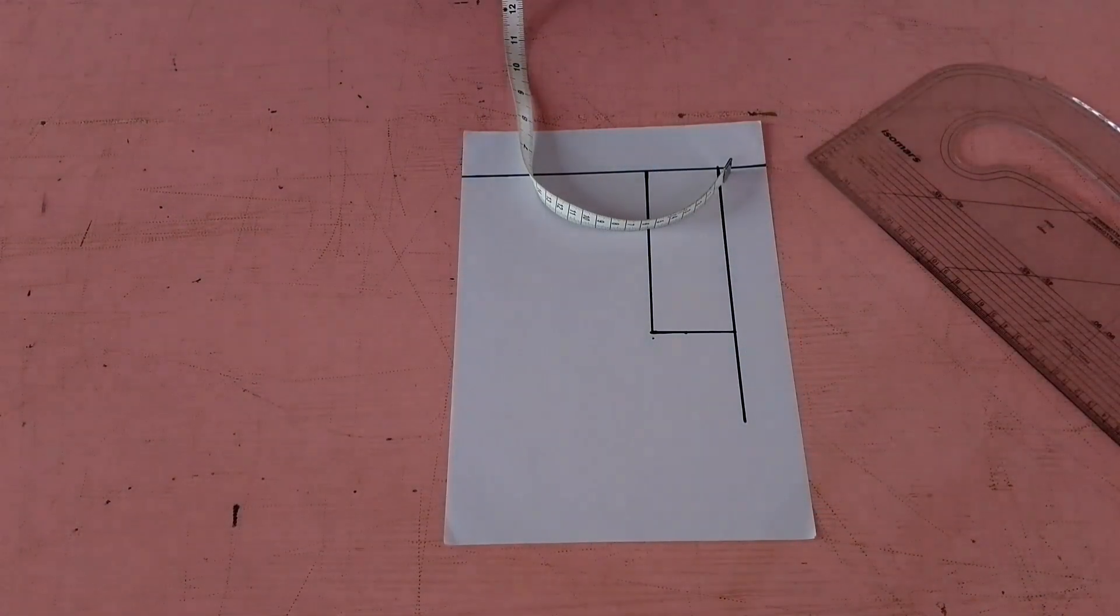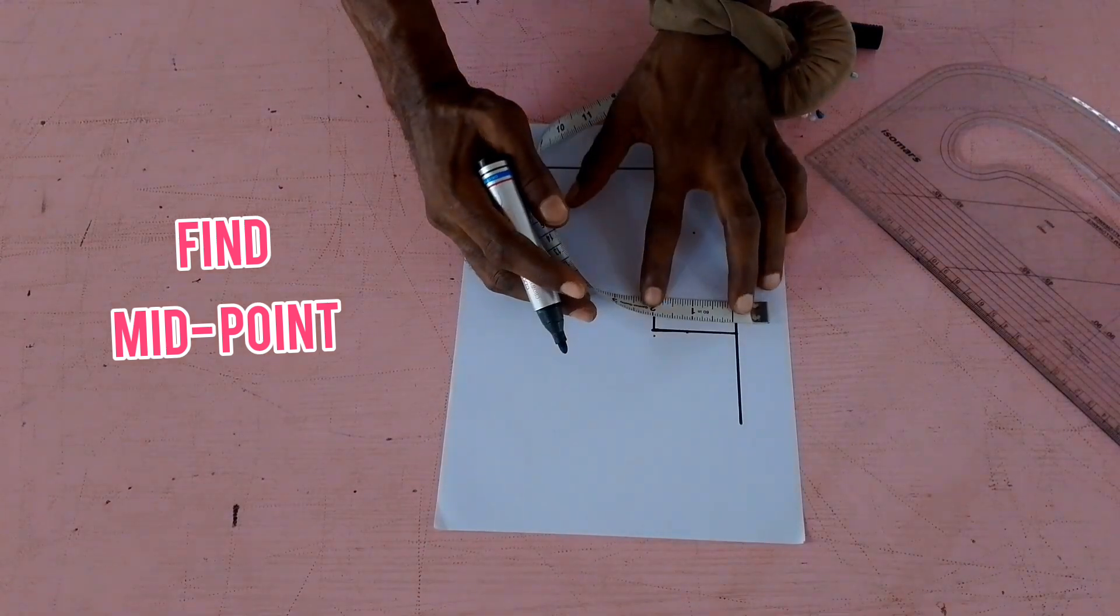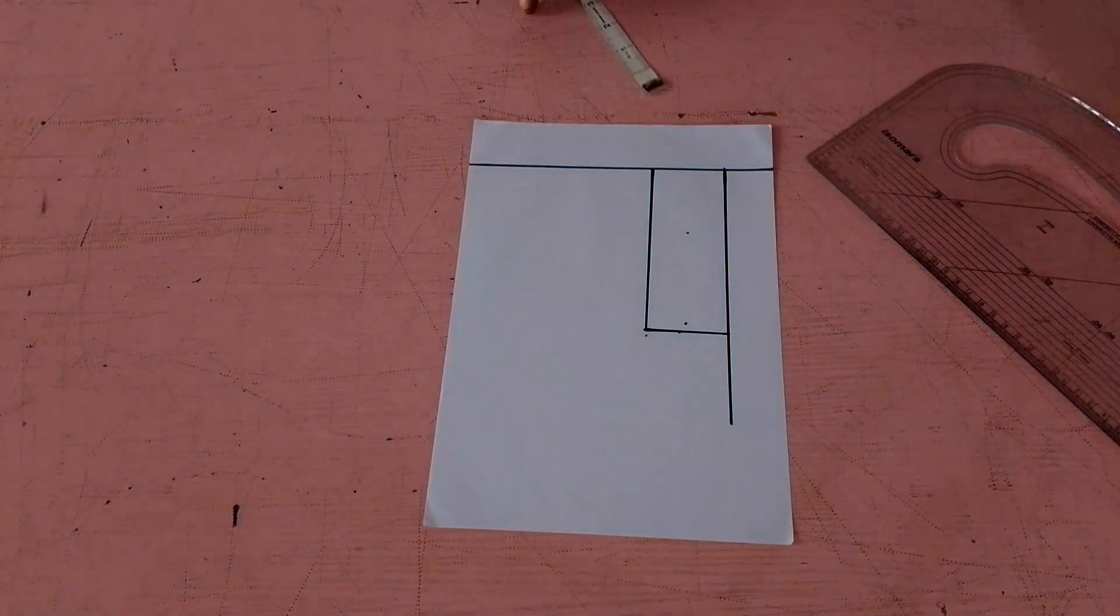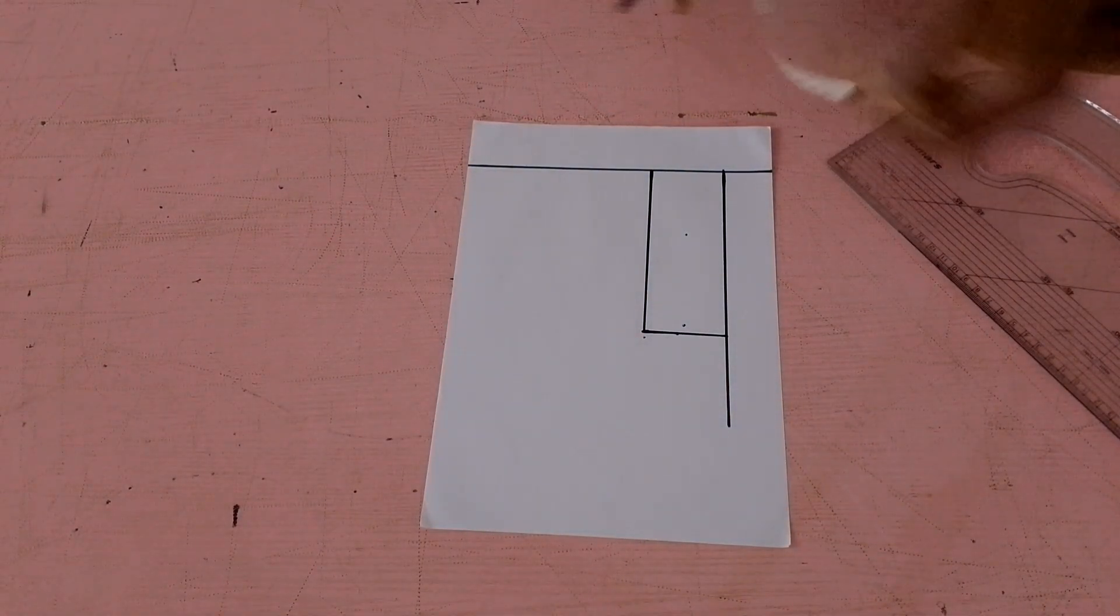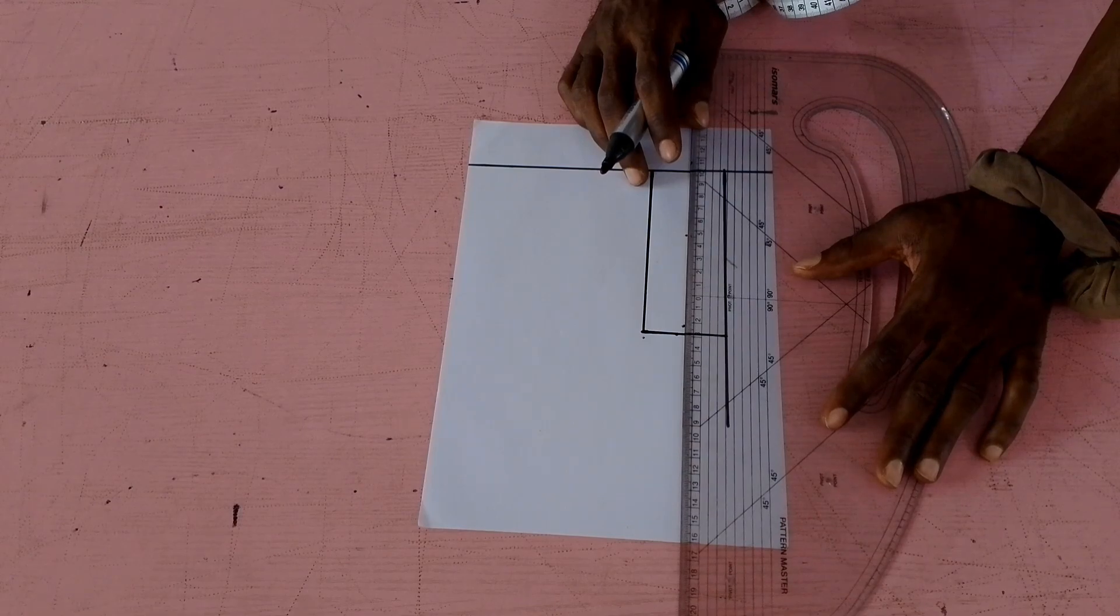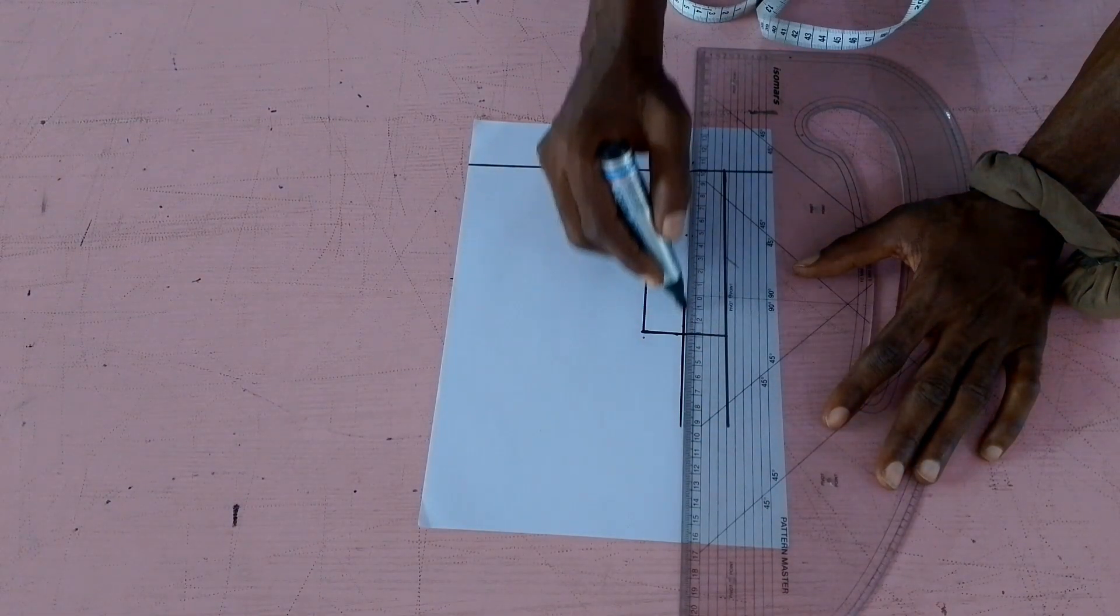Next, we're going to find the midpoint of the placket. When connecting the midpoint, make sure to extend above that five inch mark.